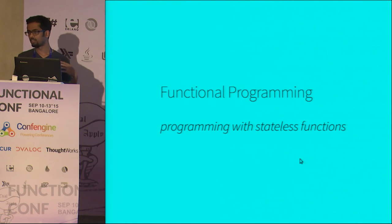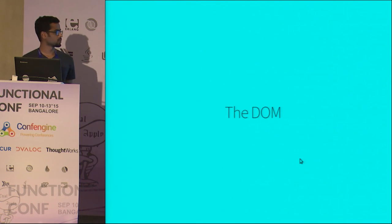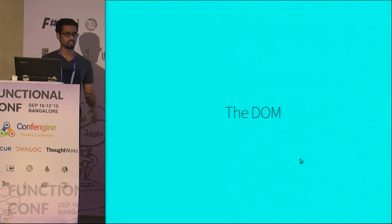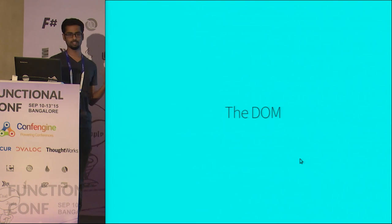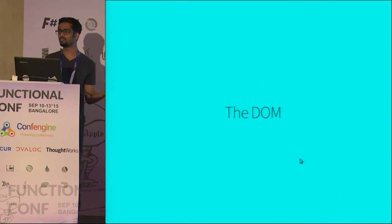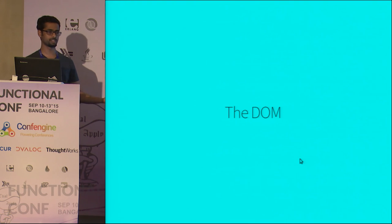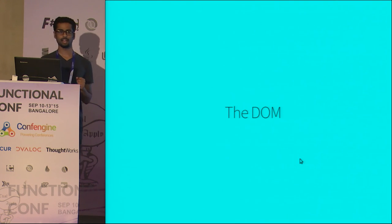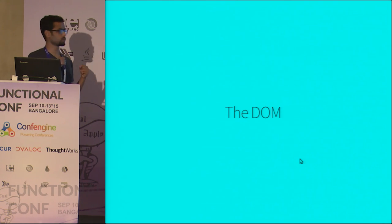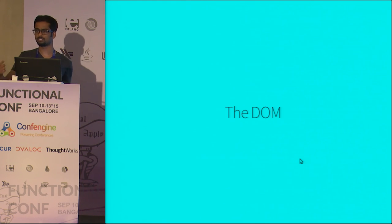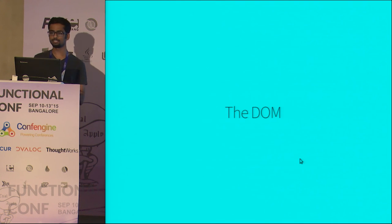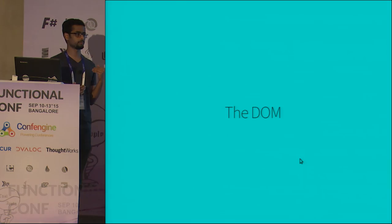The most dominant way of writing UI today is using the web. The web has this API called the DOM — Document Object Model — which is a convention where you use this object called Document, which is a huge mutable data structure. The way you write programs to manipulate it is to go and mutate certain parts of the DOM so that you can see the changes reflect in your UI. This is inherently a stateful abstraction.